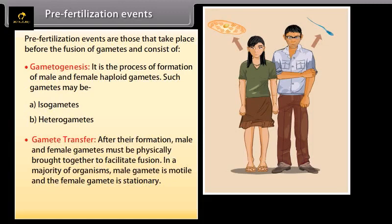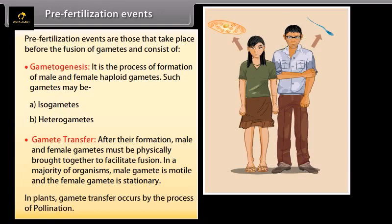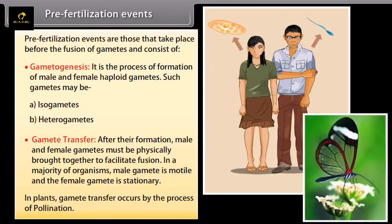Gamete transfer: after the formation of gametes, male and female gametes must be physically brought together to facilitate fusion. In a majority of organisms, the male gamete is motile and the female gamete is stationary. In plants, gamete transfer occurs by the process of pollination.